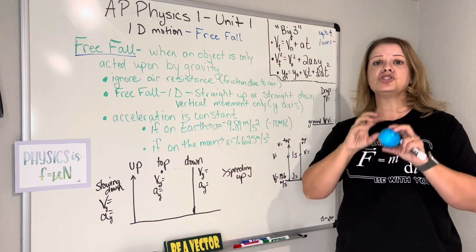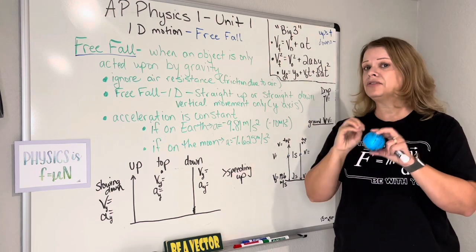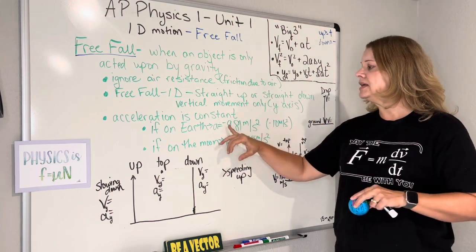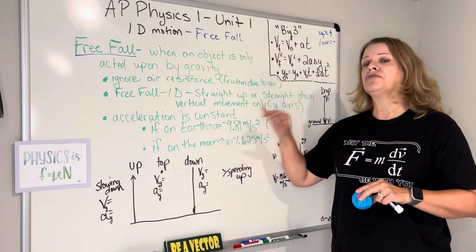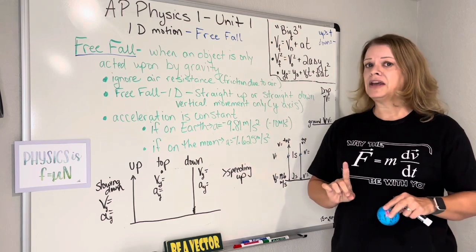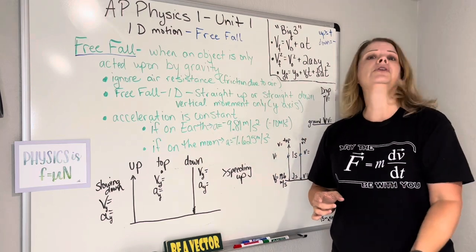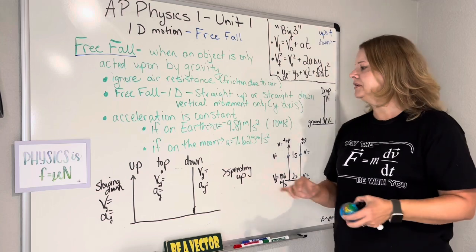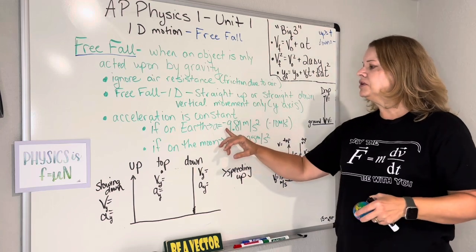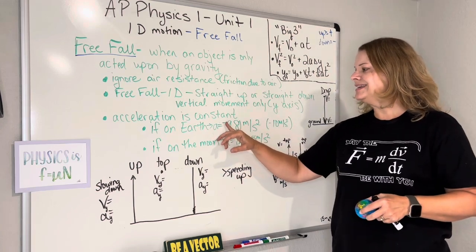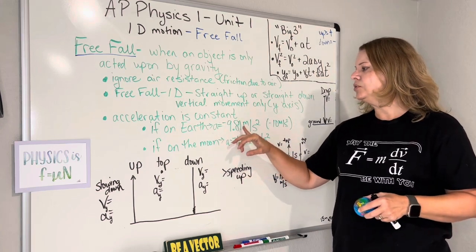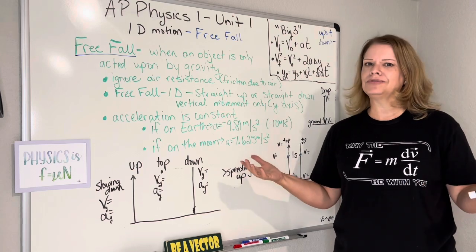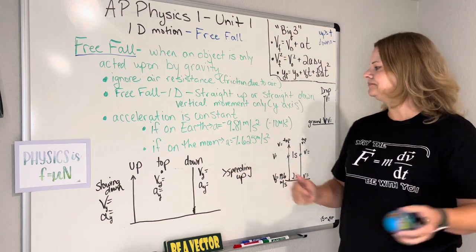Remember, acceleration is that change in velocity over time. So what does that mean? It means for every second an object falls, or you throw it up, it's going to be changing by negative 9.81 meters per second. That's all it means — for every second.